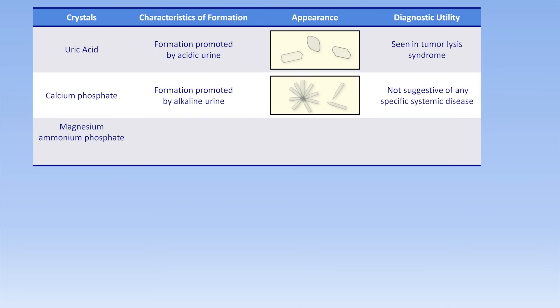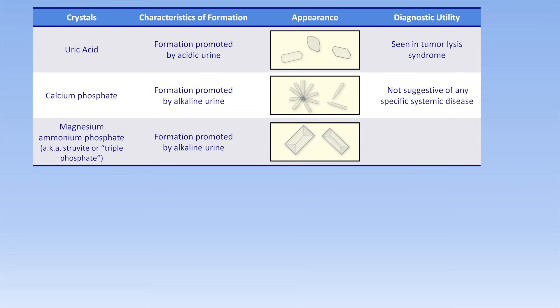Magnesium ammonium phosphate crystals — also called struvite or triple phosphate crystals — are seen in alkaline urine, particularly when the ammonium concentration is unusually high. They have a sharp rectangular appearance. They can be seen in UTIs by urease-producing organisms such as Proteus and Klebsiella, which lead to high ammonia levels as well as alkaline pH.